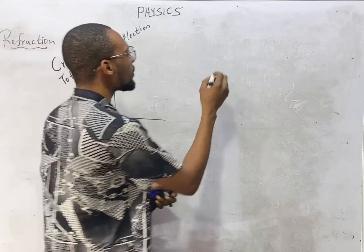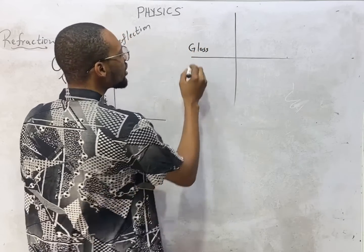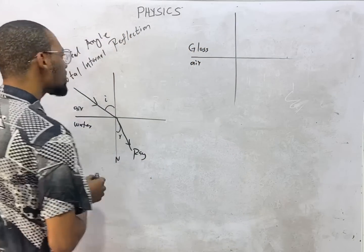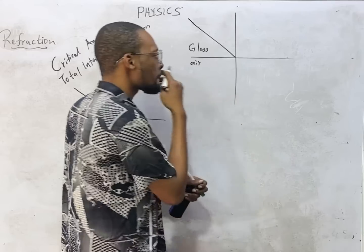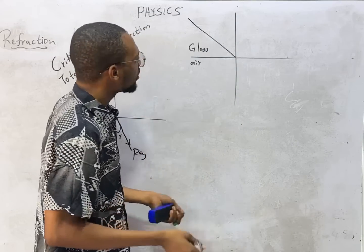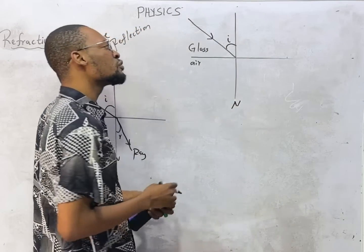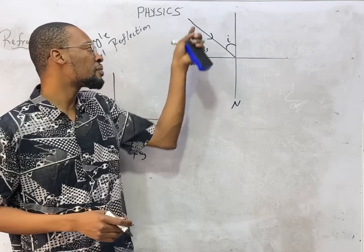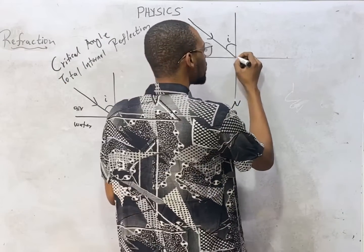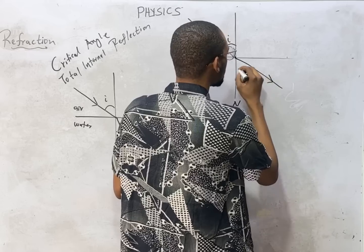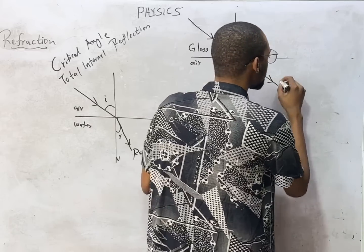Now, in the case whereby this is a boundary — let's call here glass and let's call here air — you notice that glass is a denser medium and air is a less dense medium. So if light is incident at this angle, since light is moving from a denser to a rarer medium, it will not bend towards the normal; it will bend away from the normal. So the refracted angle and refracted ray go this way.